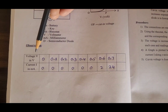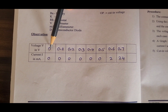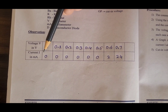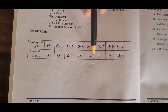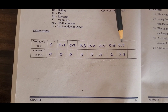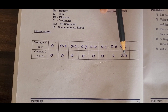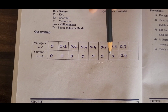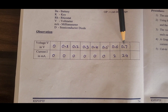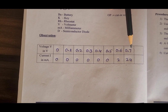Observing the tabular column: voltage was increased from 0.1, 0.2, 0.3, 0.4, 0.5, 0.6, 0.7 volts and so on. Initially there was no current — current was completely zero. Exactly at 0.6 volt there is a small increase in current, and for 0.7 volt there is a rapid increase in current — that value is 24 milliamperes. Since current increases rapidly at 0.7 volt, the cut-in voltage is 0.7 volt.